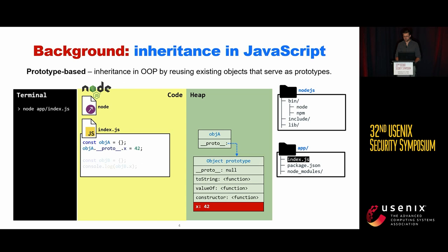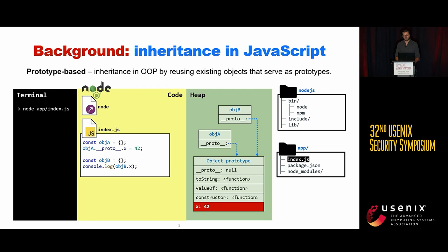To implement inheritance, JavaScript allows extending the prototype with new properties. In this example, we define the property X with the value 42. Things get more interesting when we create another object, in principle unrelated to the first one. Both objects share the same prototype. When the runtime executes the last line to print the X property for the second object, it tries to find the property in the object itself. Since X is undefined for the second object, the runtime looks up property X in the prototype and prints 42 to the terminal.